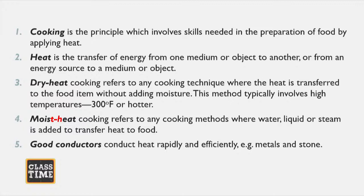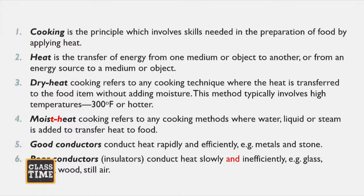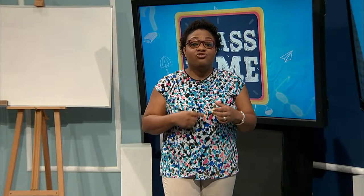We need a medium to transfer this heat — we look at conductors. There are two categories: good conductors and poor conductors. Good conductors transfer heat rapidly and efficiently to the food item; they tend to be metals and stones — you can see this with cooking utensils like pots, which are made of metal. Poor conductors conduct heat slowly and inefficiently — for example, glass, plastic, or still air. The key difference is that poor conductors tend to be insulators: they hold the heat and do not transfer it, while good conductors transfer heat.